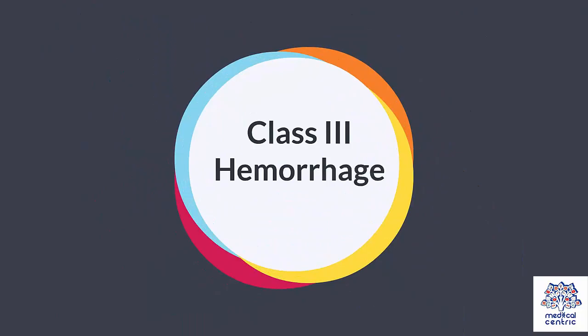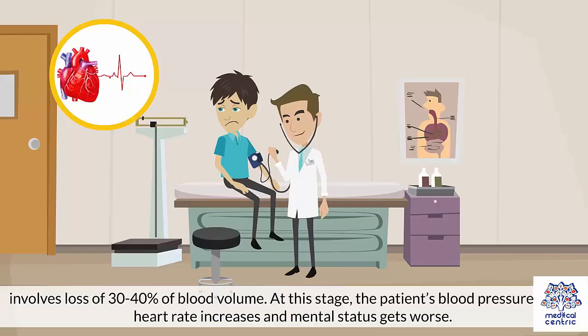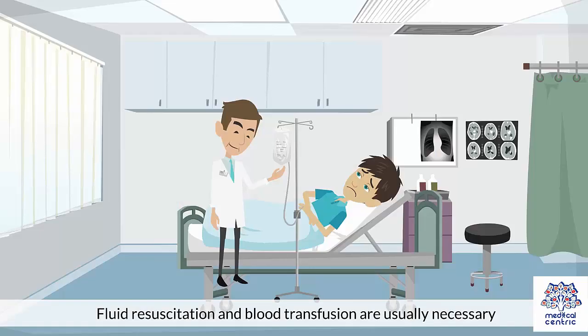Class III hemorrhage involves loss of 30–40% of blood volume. At this stage, the patient's blood pressure drops, heart rate increases, and mental status gets worse. Fluid resuscitation and blood transfusion are usually necessary.